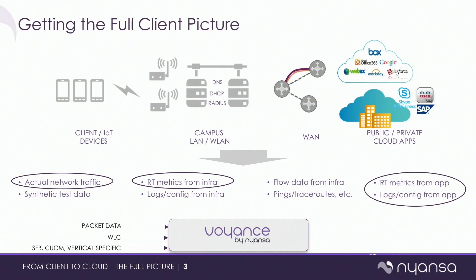We take metrics directly from certain applications — Skype for Business, Cisco UC or CUCM — and a bunch of vertical-specific stuff. In healthcare, for clinician communication applications, we take data from bedside monitors. You're telling those applications to send data to the platform — this is extra data, not something seen inline. The packet data can also tell you a lot about applications since you can identify the application and reconstruct the user experience score, but this is extra beyond that.